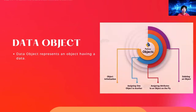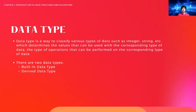Next is the data type. You may have another course or subject covering programming where data types are explained in more detail. For this subject, a data type is a way to classify various types of data, such as integer and string. It defines the values that can be used and the type of operations that can be performed on the corresponding type of data. There are two categories of data types: built-in and derived.